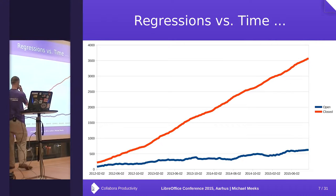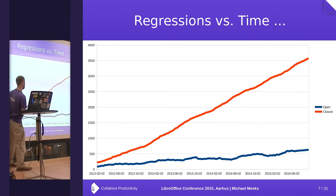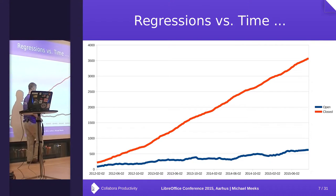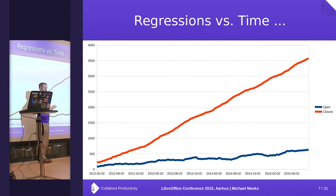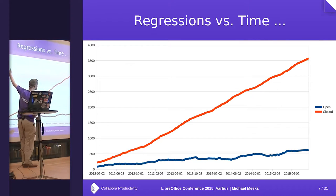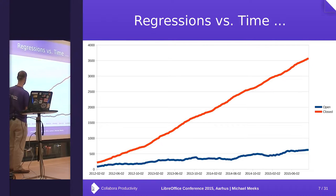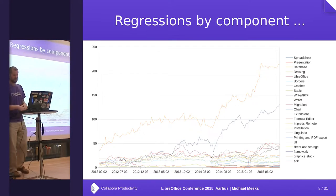So here are our regressions versus time. These are the closed bugs and these are the open ones. There is a slow but steady trend over however many years to increase the number of regressions. But I'd like to persuade you the line of this curve is not some kind of hockey stick. It doesn't sound good to have regressions increasing, but on the other hand we fixed three and a half thousand plus regressions, many of which never escaped. I should probably track escape regressions and draw you some nice graphs, but I didn't have time.